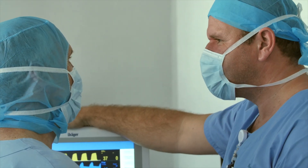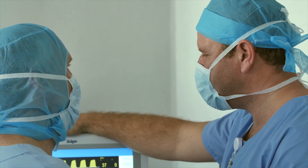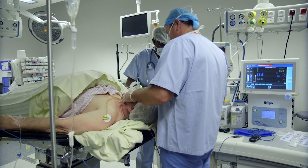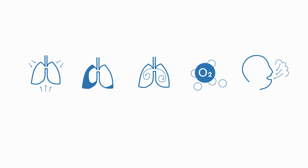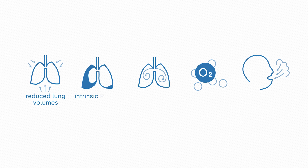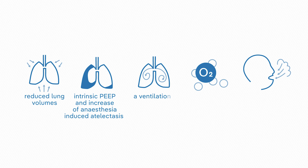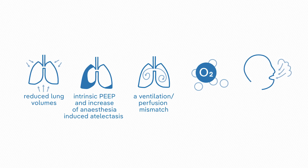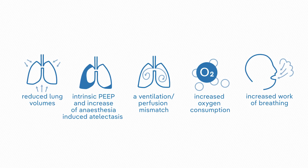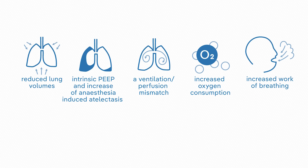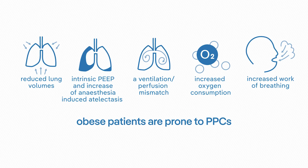Due to their anatomical and physiological peculiarities, obese patients present a set of challenges for anesthesiologists and require specific perioperative care compared to lean patients. In particular, morbid obesity results in reduced lung volumes, intrinsic PEEP, increased anesthesia-induced atelectasis, and ventilation-perfusion mismatch. At the same time, these patients have an increased oxygen consumption and work of breathing. In combination, these factors amplify the risks associated with general anesthesia, thus making obese patients prone to post-operative pulmonary complications.